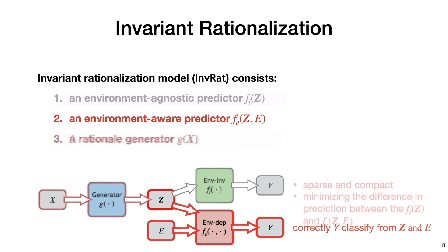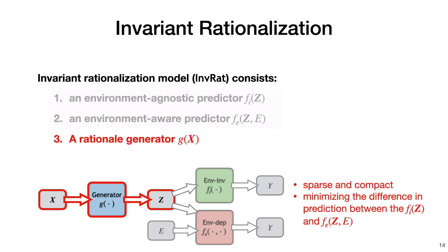The rationale generator tries to find the rationale that minimizes the performance gap between the two predictors. The intuition is that if the rationale is invariant, knowing what the environment is in addition to the rationale should not improve the prediction performance.